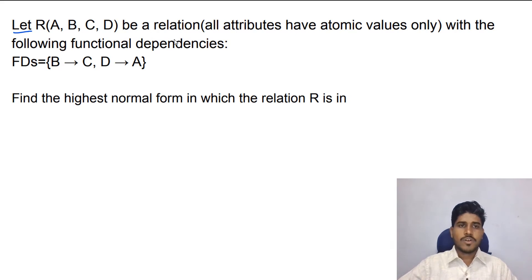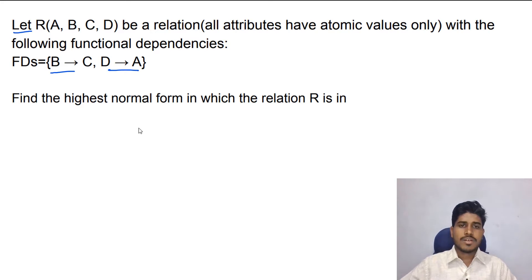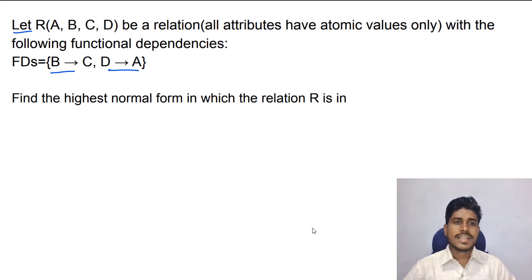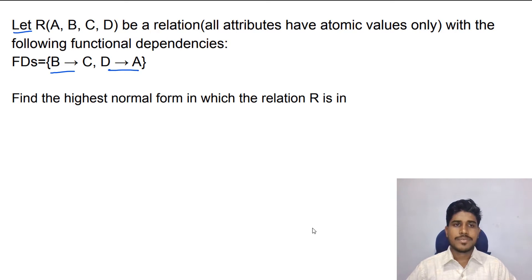Let R be a relation with the following functional dependency: B determines C, D determines E. Find the highest normal form in which the relation R is in. First we have to find the candidate key. We have already discussed how to find candidate keys in a previous video, so we will directly state the candidate keys.